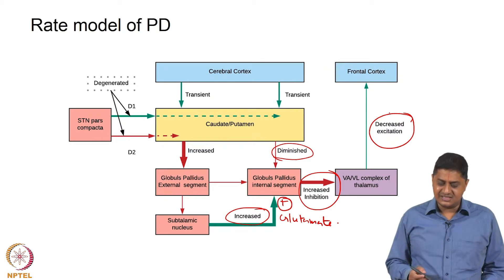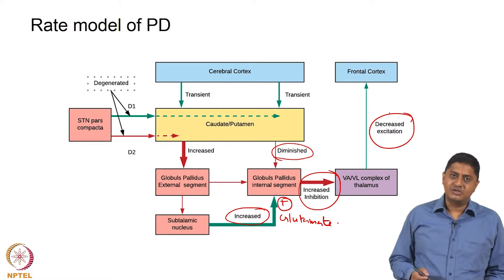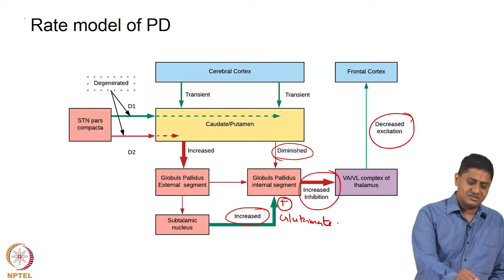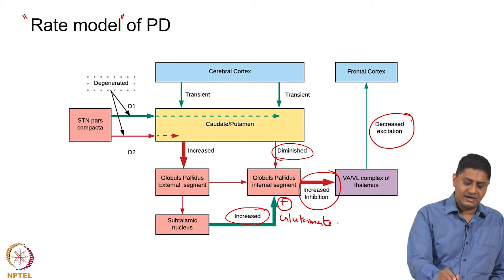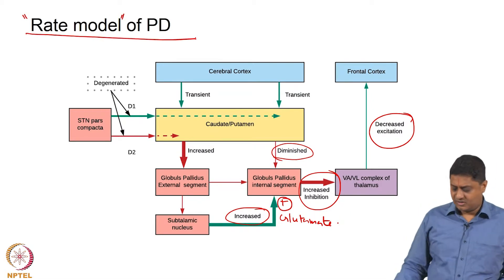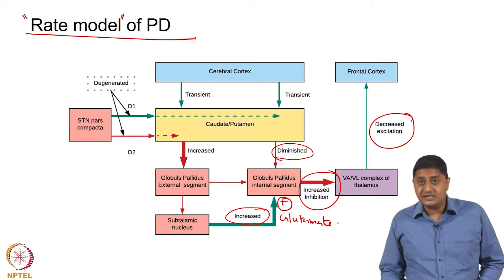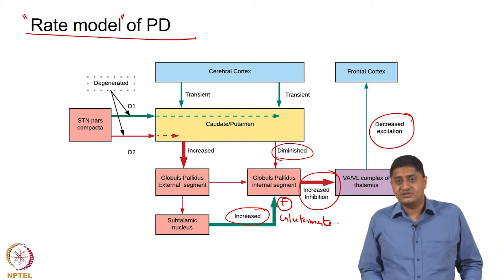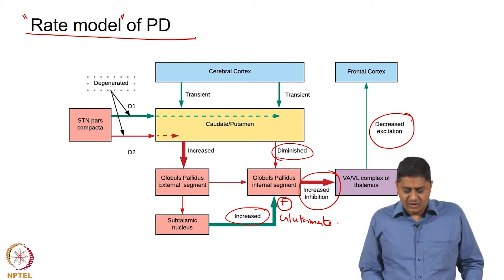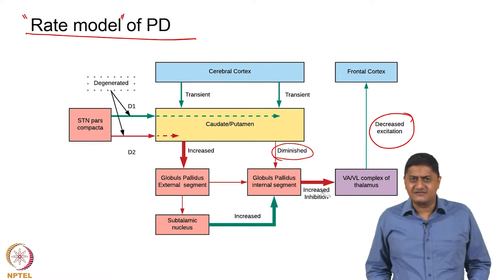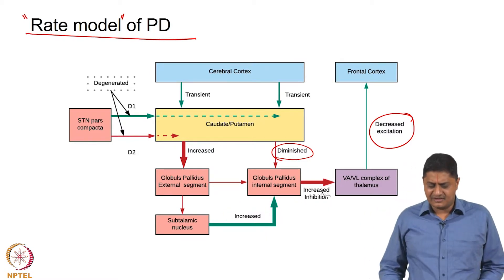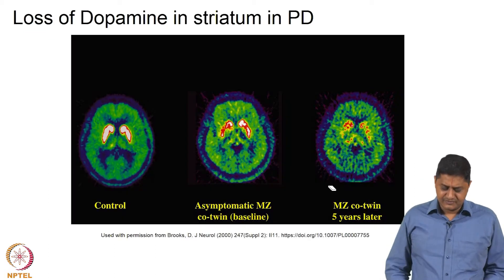This has then come to be called the famous, or so-called, rate model of Parkinson's disease. Fortunately, this model is able to explain a whole lot of data on patients. However, this model has its limitations — there are several cases where this model cannot explain specific pathophysiology.